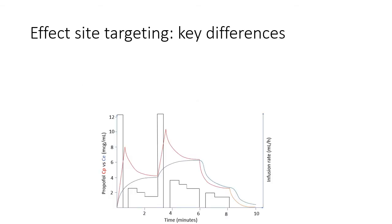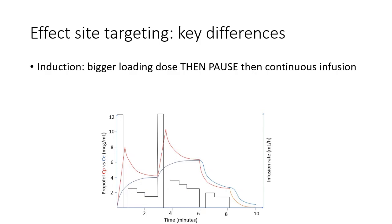In effect site targeting, the machine does more or less the same thing, but there are a number of key differences. At induction, the machine will administer a bolus, then pause, then begin infusing.